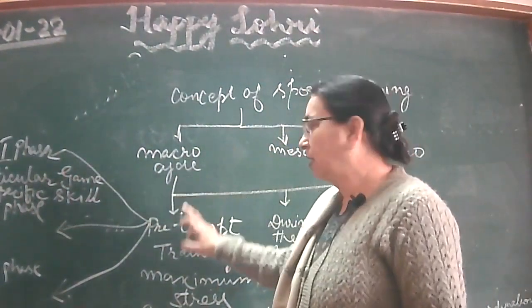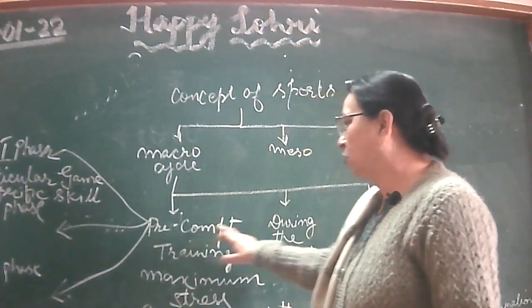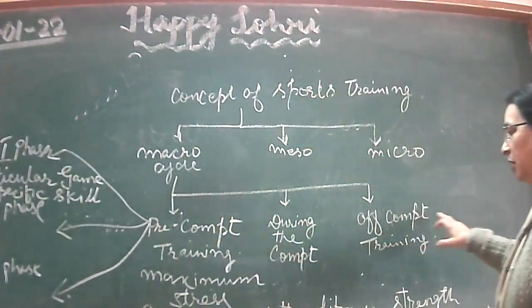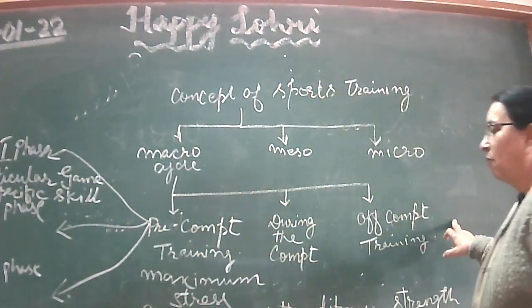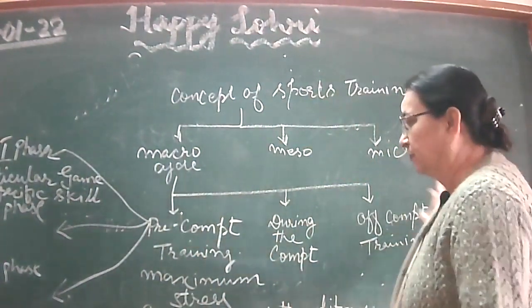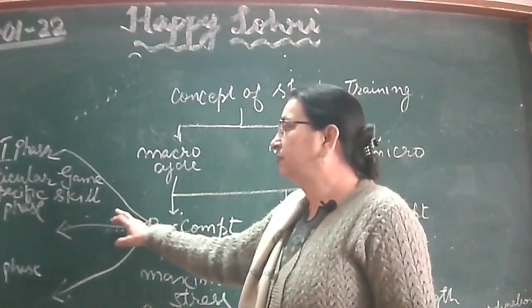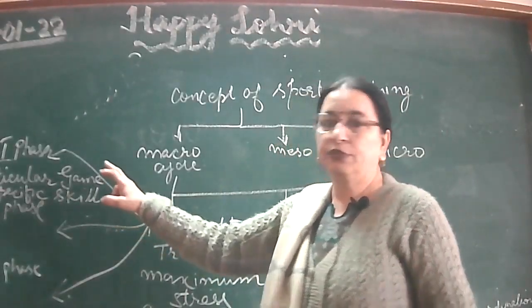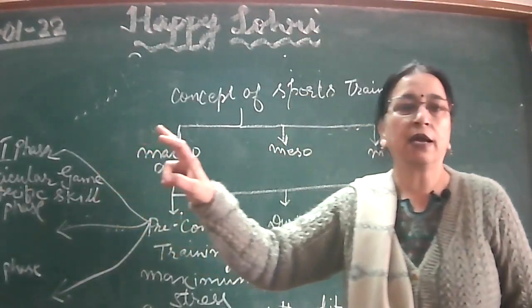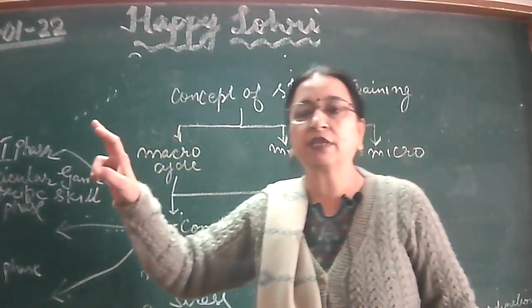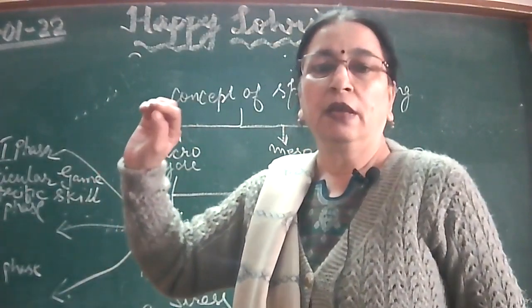We have pre-competition, during competition, and off-competition. Pre-competition is further divided into three parts: the first phase, second phase, and third phase.